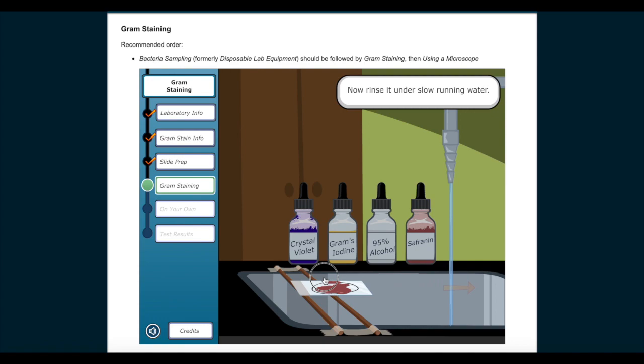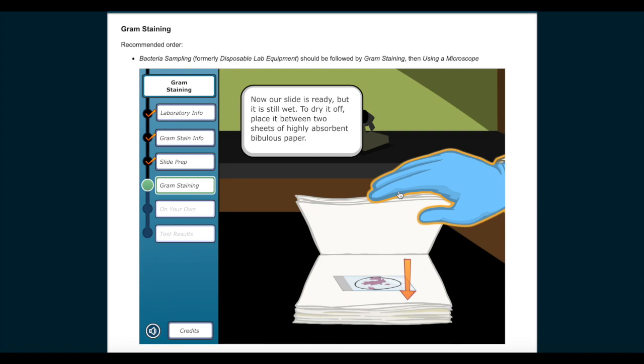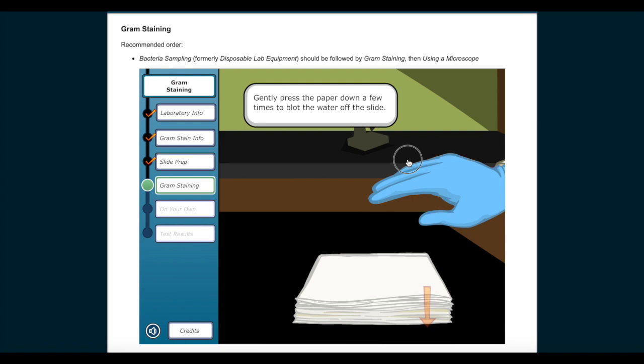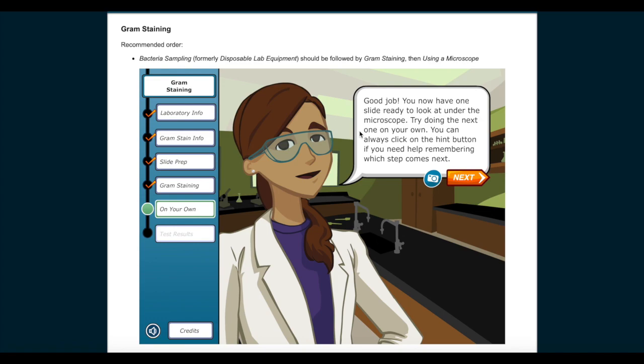Now our slide is ready, but it is still wet. To dry it off, place it between two sheets of highly absorbent bibulous paper. Gently press the paper down a few times to blot the water off the slide. Good job! You now have one slide ready to look at under the microscope. Try doing the next one on your own. You can always click on the hint button if you need help remembering which step comes next.